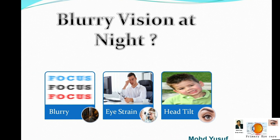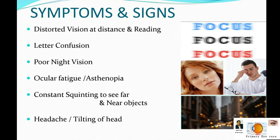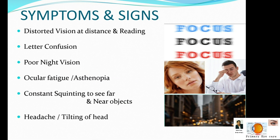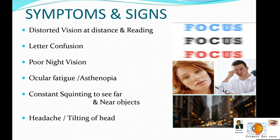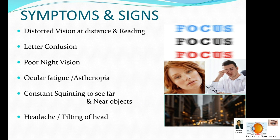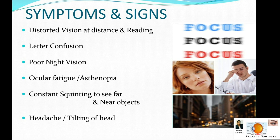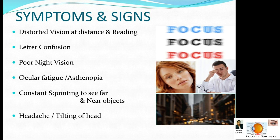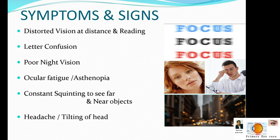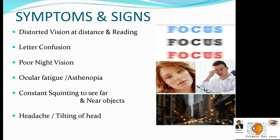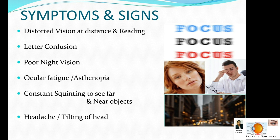So, blurry vision at night — what is it all about? The symptoms are distorted vision. You can see, but you will feel there is a distortion, as shown in the image. There is also confusion — sometimes you can see and sometimes you will not be able to see clearly.